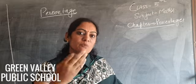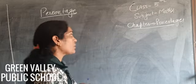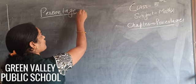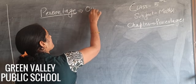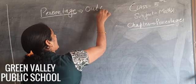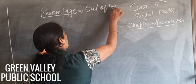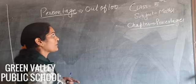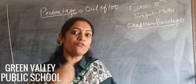Simply, how do we say it? Out of hundred — so whatever we have out of hundred, that is the percentage.